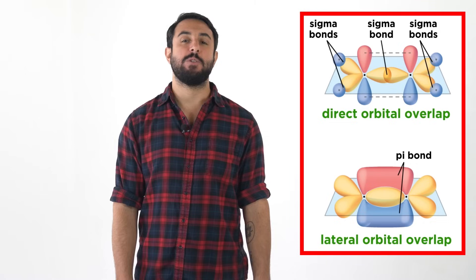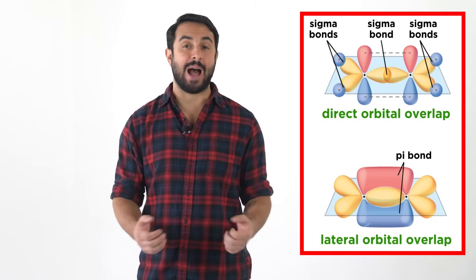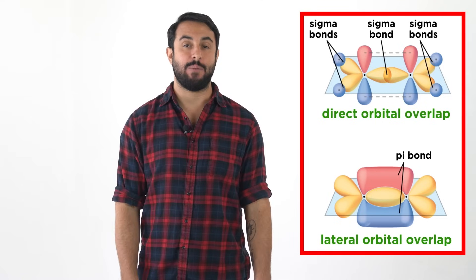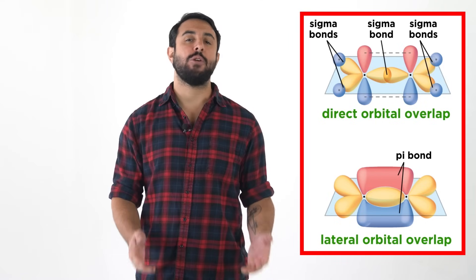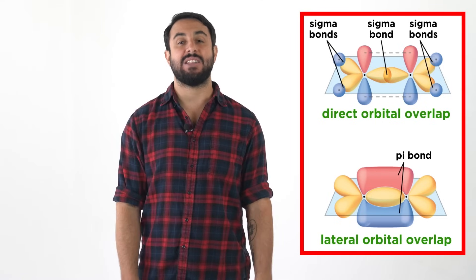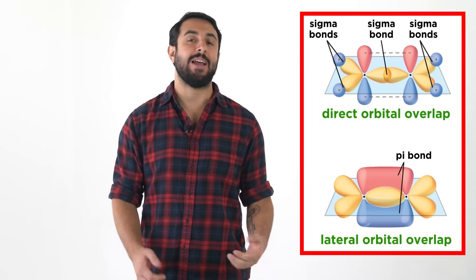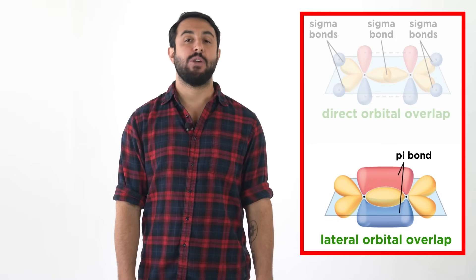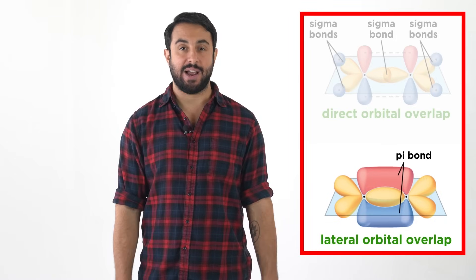We know the difference between sigma bonds and pi bonds, which involve direct orbital overlap and lateral orbital overlap respectively. But there is another big difference between the way sigma electrons and pi electrons behave within a molecule, which is that the latter have the potential to be delocalized.